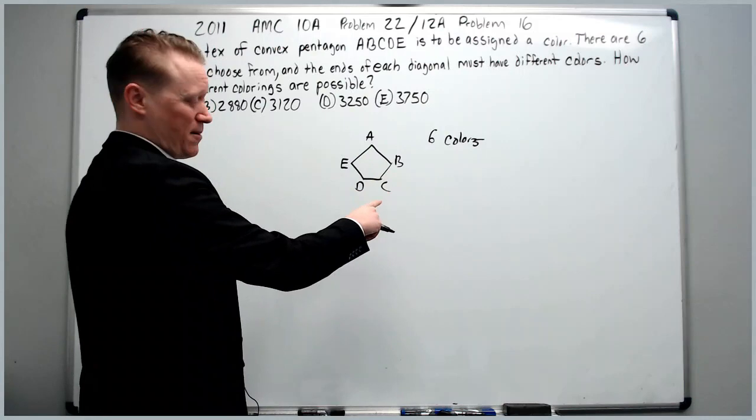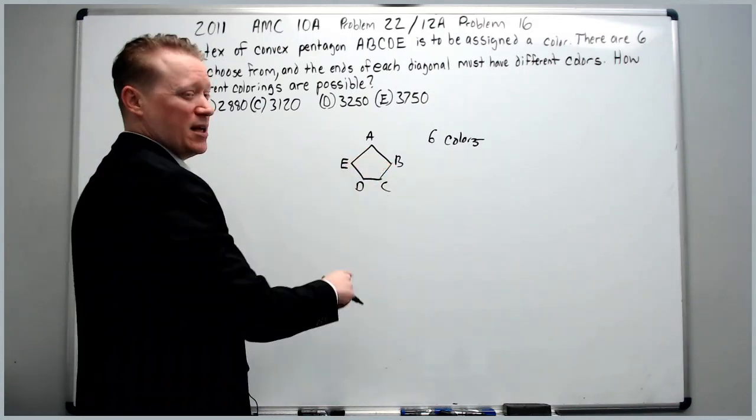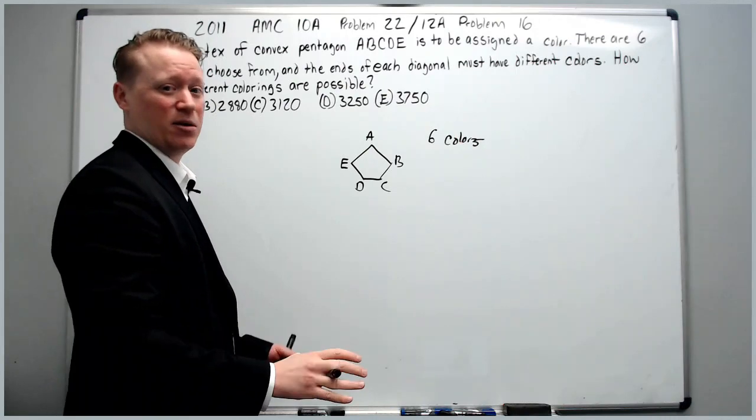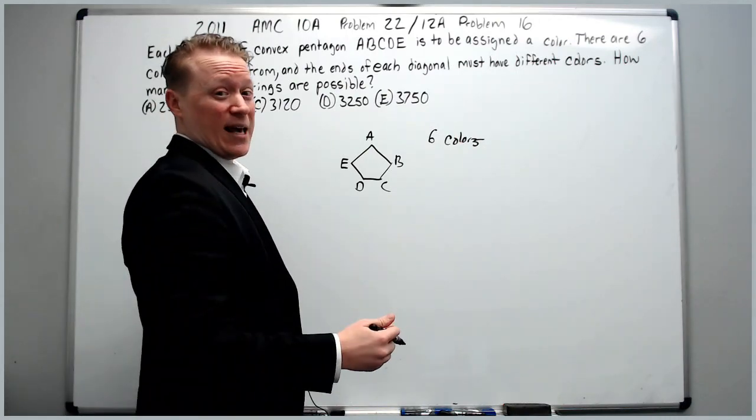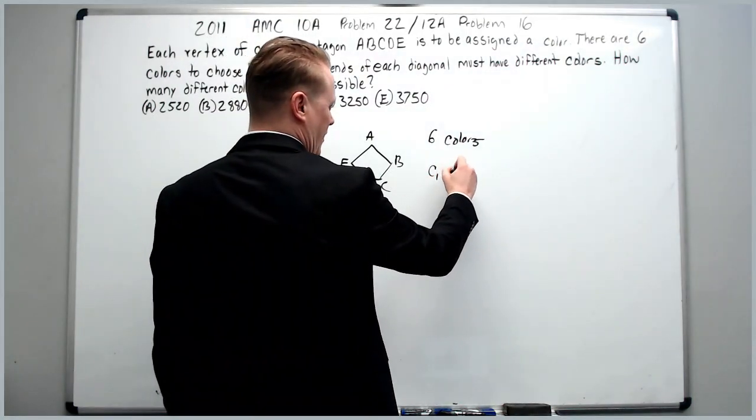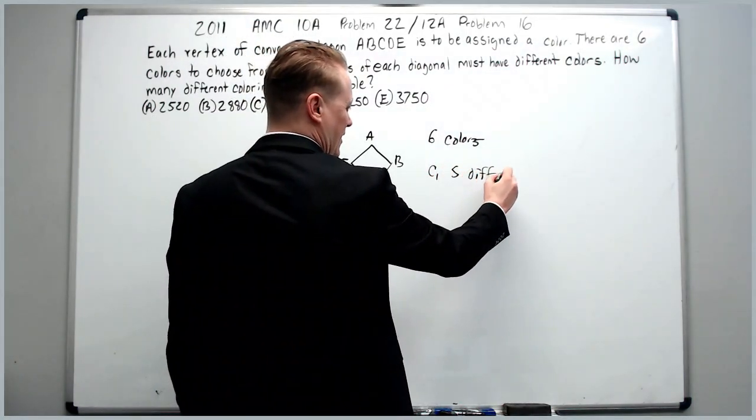Three cannot have the same color. Because if E, A, and B were all the same color, E could connect to B and be a diagonal and that would be bad as well. So we're going to want to make cases. And the cases are as follows.